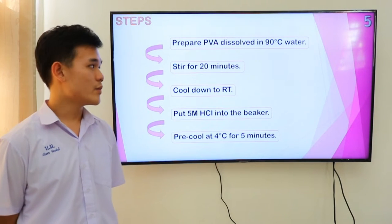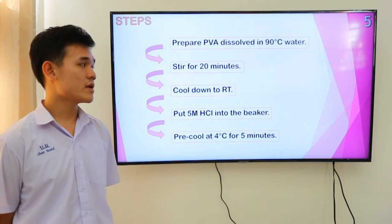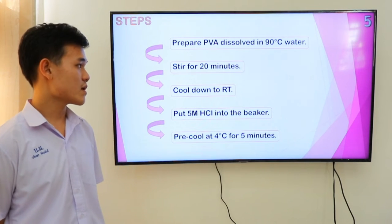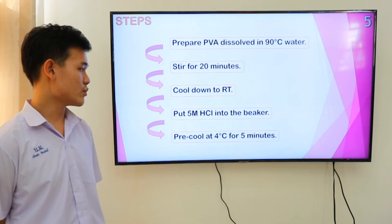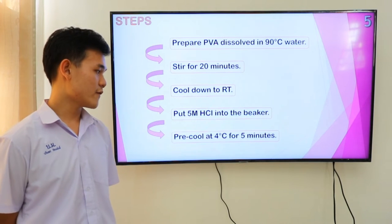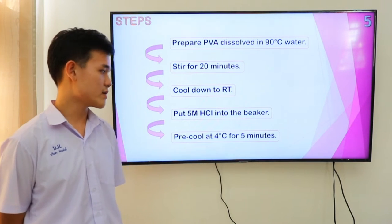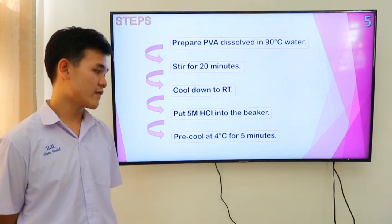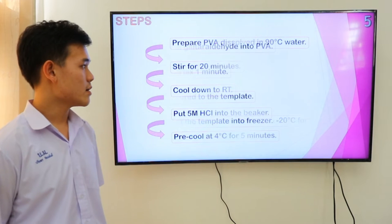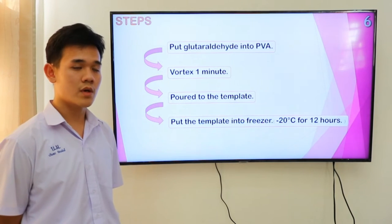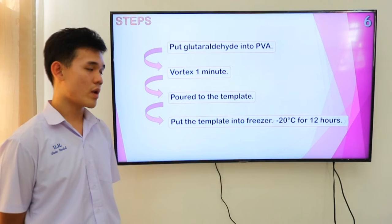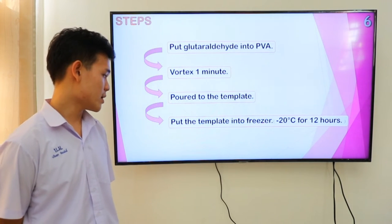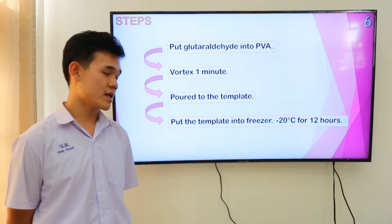Steps: First, prepare polyvinyl alcohol dissolved in 90 degrees Celsius water. Next, stir for 20 minutes and then cool down to room temperature. Next, put 5 molar hydrochloric acid into the beaker and pre-cool at 4 degrees Celsius for 5 minutes. Next, put glutaraldehyde into the polyvinyl alcohol and vortex for 1 minute. Next, pour into the template and put the template into the freezer.